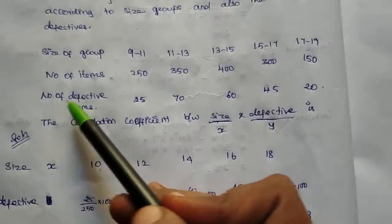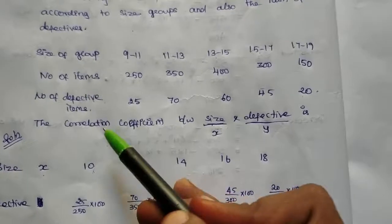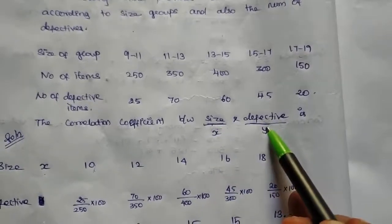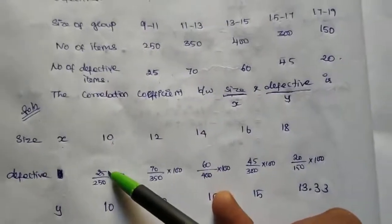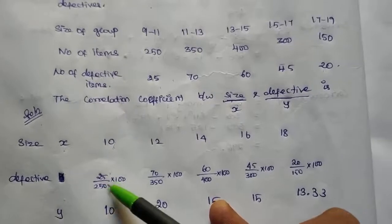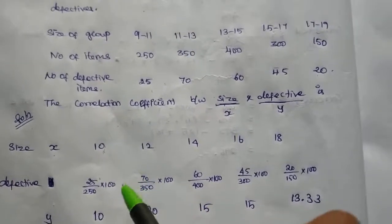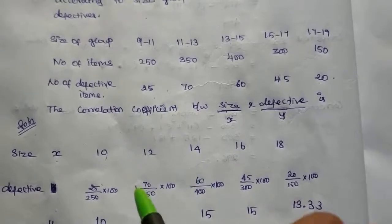Number of defective items, number of items, correlation coefficient size and defective. So Y is percentage: number of defective divided by total number of items times 100.